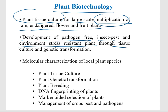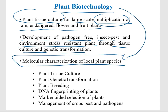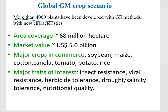In plant biotechnology, we make resistant plants through tissue culture and genetic transformation, and we can also do molecular characterization of local plant species. The work done in plant biotechnology includes plant tissue culture, plant genetic breeding, plant breeding, DNA fingerprinting of plants, marker-assisted selection of plants, and management of crop pests and pathogens.